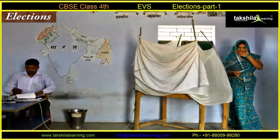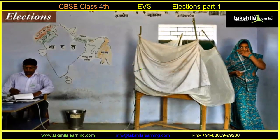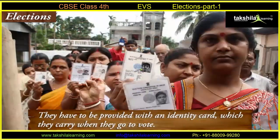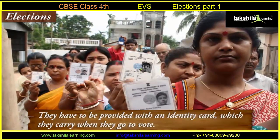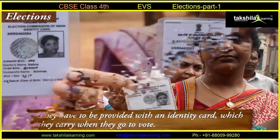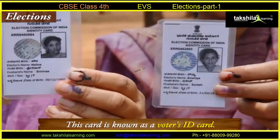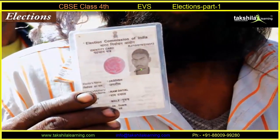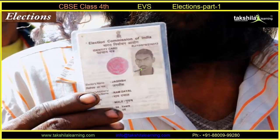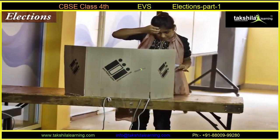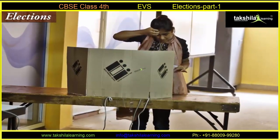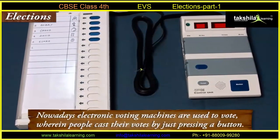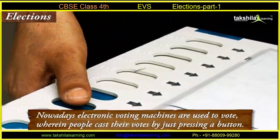The voters go to the polling booth to vote. They have to be provided with an identity card, which they carry when they go to vote. It is known as a voter's ID card. It has all the details of the person, including a photograph. Voting is done by secret ballot. Nowadays, electronic voting machines are used to vote, wherein people cast their votes by just pressing a button.